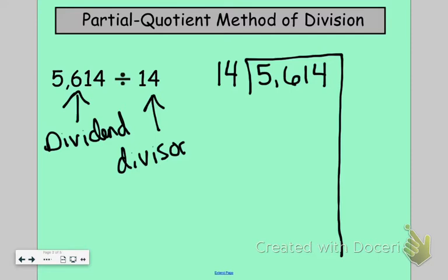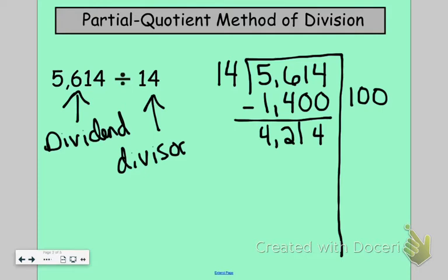So I'm going to try 100 and I know that 14 times 100 is going to give me 1,400 and then I'm going to take that away. Okay, so I end up with 4,214.